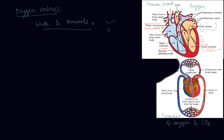Birds and mammals constantly use energy to maintain their body temperature. In animals that do not do this — such as amphibians and many reptiles — body temperature depends on the environment. Fishes, on the other hand, have only two chambers in their heart; the blood is pumped to the gills, oxygenated there, and passes directly to the rest of the body.